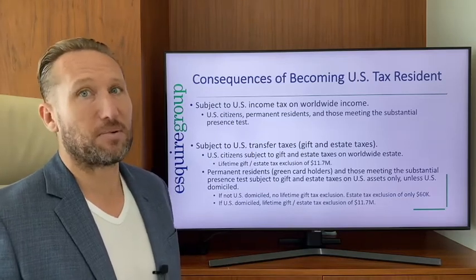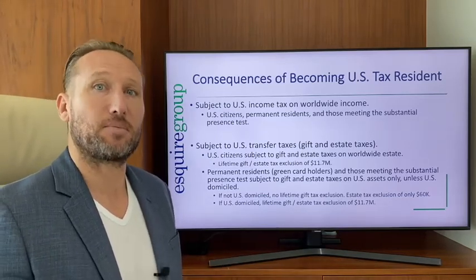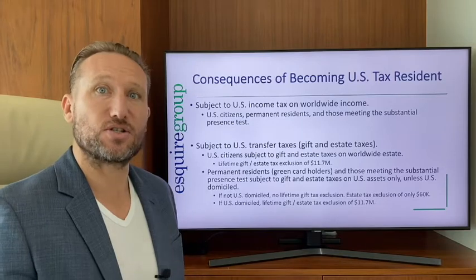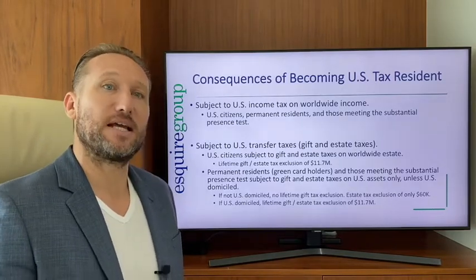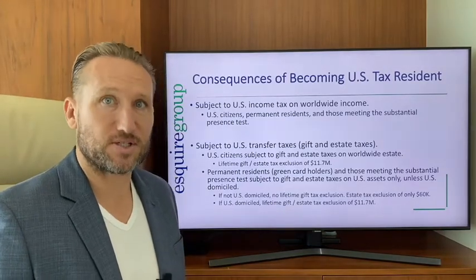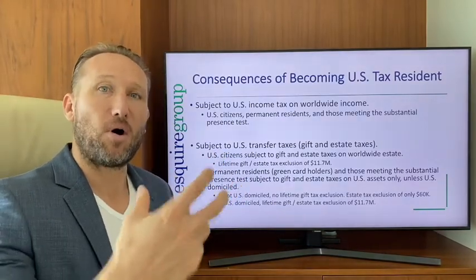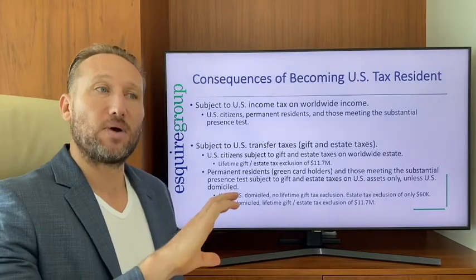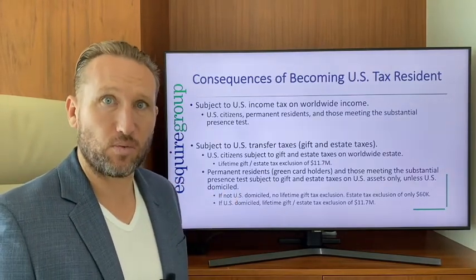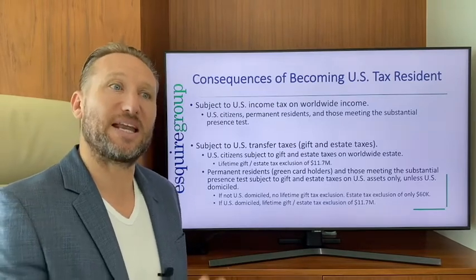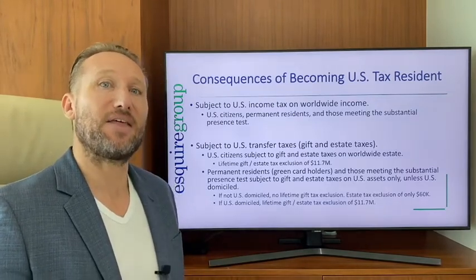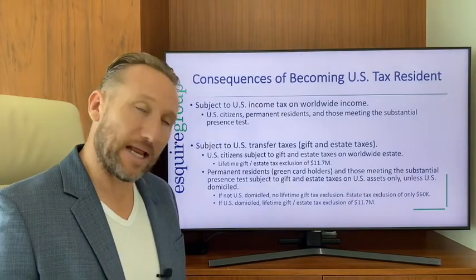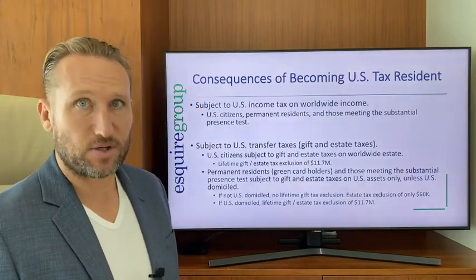A lot of people believe that simply by getting a work visa you automatically become a U.S. tax resident — that's not true. It's based on the amount of time you spend in the United States; this is called the substantial presence test. To find out if you meet it for 2021, you add all the days spent in the U.S. in 2021 — if at least 31 — then add all days in 2021, a third of the days from 2020, and a sixth of the days from 2019. If that number equals 183 or more, you're considered a U.S. tax resident, liable for U.S. income tax on worldwide income.